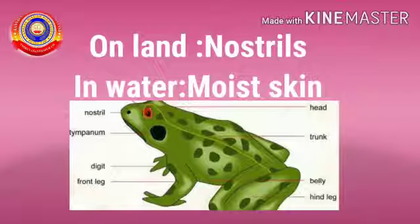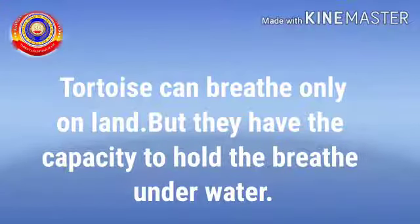Nostrils means nose. In water, they can breathe through their moist skin — moist skin means wet skin. In this picture you can see the nostrils of a frog. Tortoise can breathe only on land, but they have the capacity to hold their breath under water, so they can live both on land and in water.